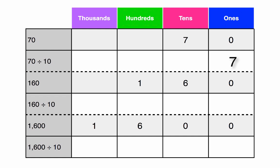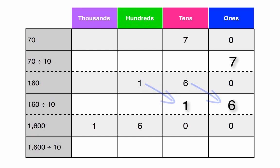Let's try with 160. 160 divided by 10. How many zeros does 10 have? 1. Exactly! Go ahead and cross out your 0 since we are dividing by 10. We only cross out when we are dividing, which means we move over one place value to the right. The 6 moves from the 10s to the 1s and the 1 moves from the 100s to the 10s, leaving us with the answer of 16.